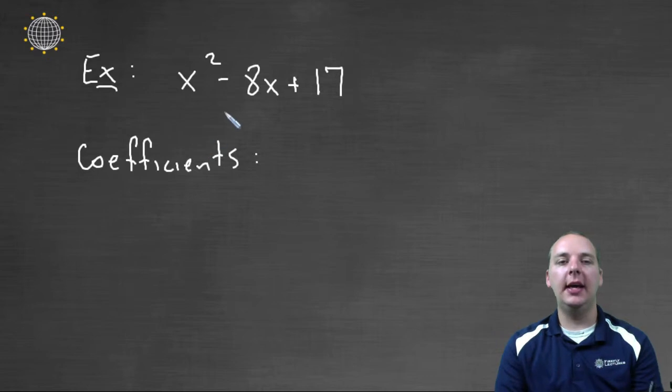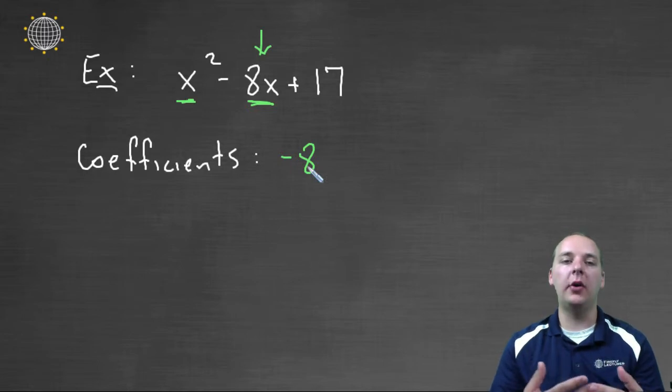This is an expression, and these variable terms here are going to have coefficients. This one here is very clear. I've got an x, and the numerical value in front of the x is negative eight. So negative eight is one of our coefficients.